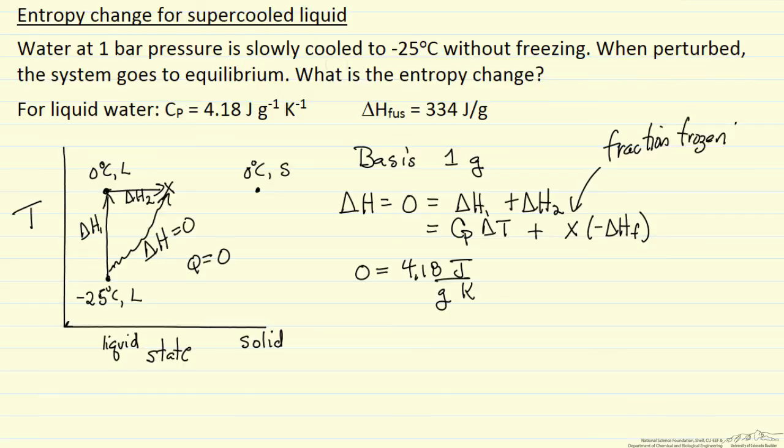So let's substitute in the heat capacity, the temperature difference. The final temperature is zero. The initial temperature is minus 25. x is our unknown. And this temperature change is Kelvin. Because a change in Kelvin, a change in centigrade is the same thing, a delta value. So this is minus 334 joules per gram.